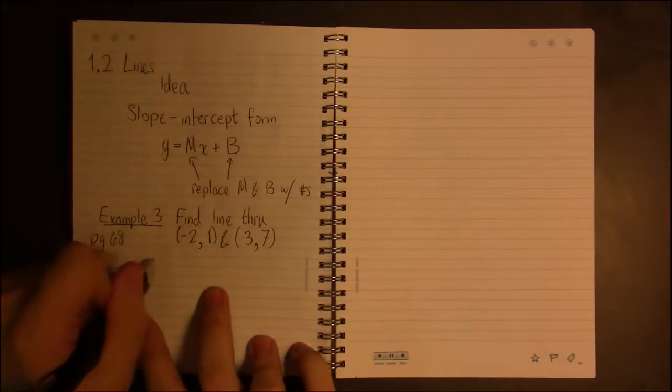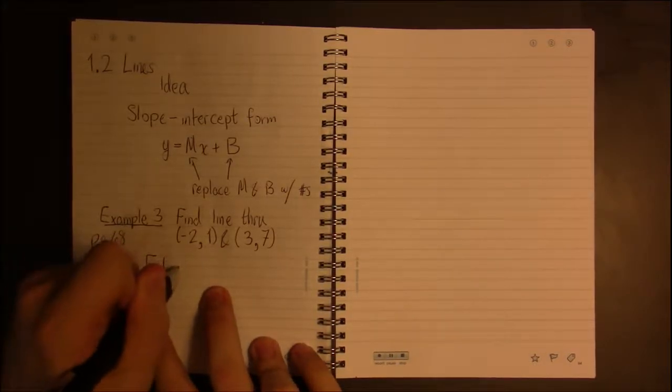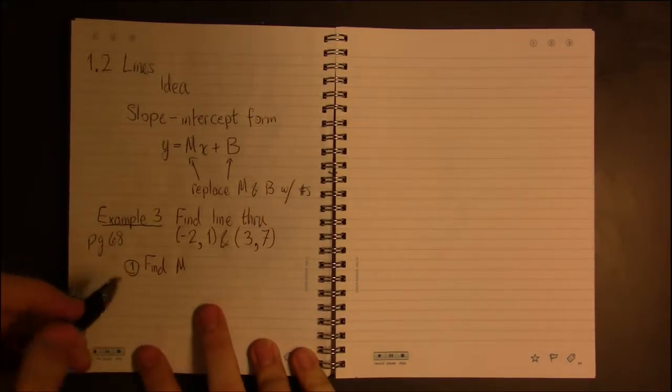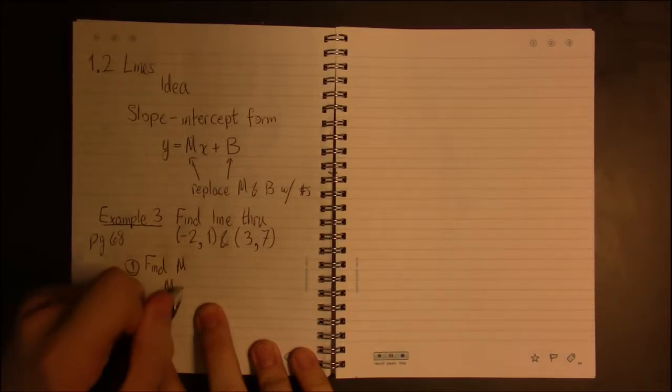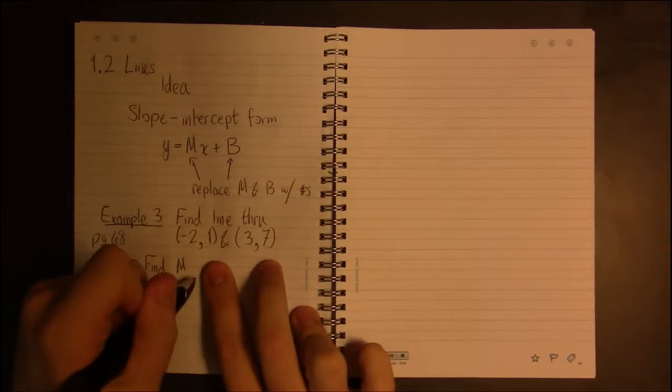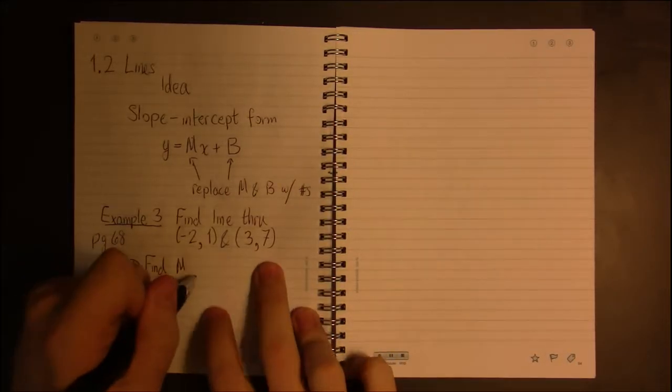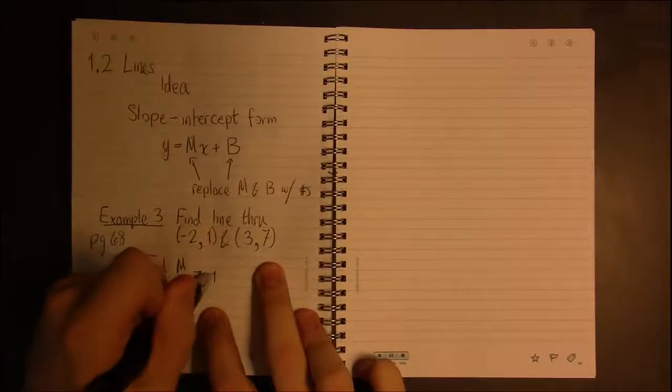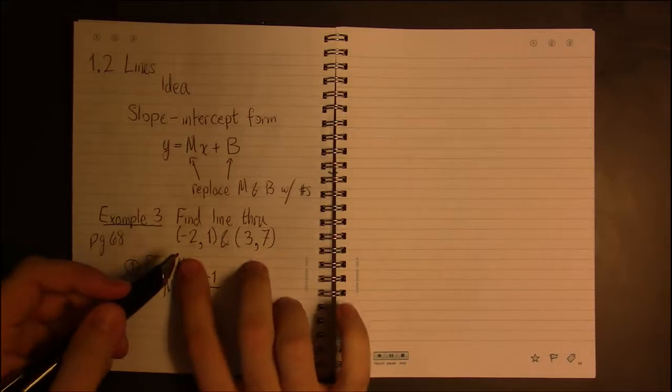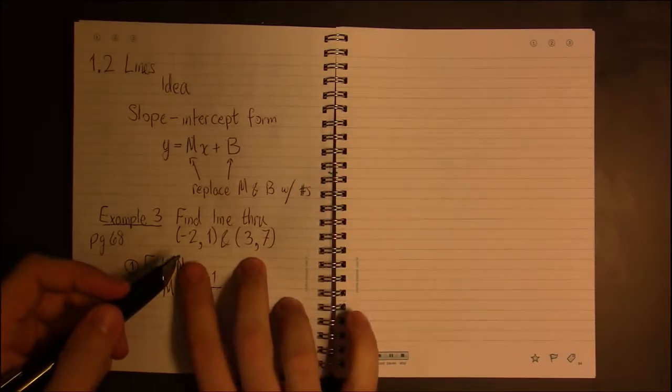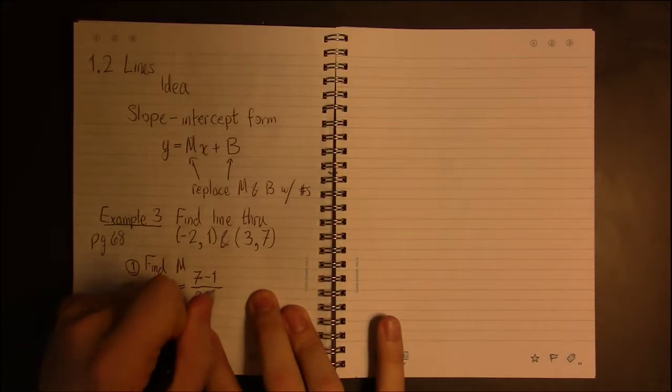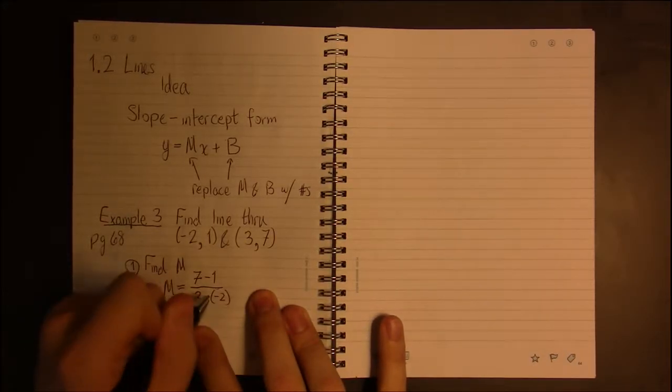So, we start off by finding m. That's step one. And m is simply the change in the y-coordinates. So, you go from 1 to 7, you calculate that distance as 7 minus 1. That change is 7 minus 1. And from -2 to 3, you calculate that movement as 3 minus (-2).